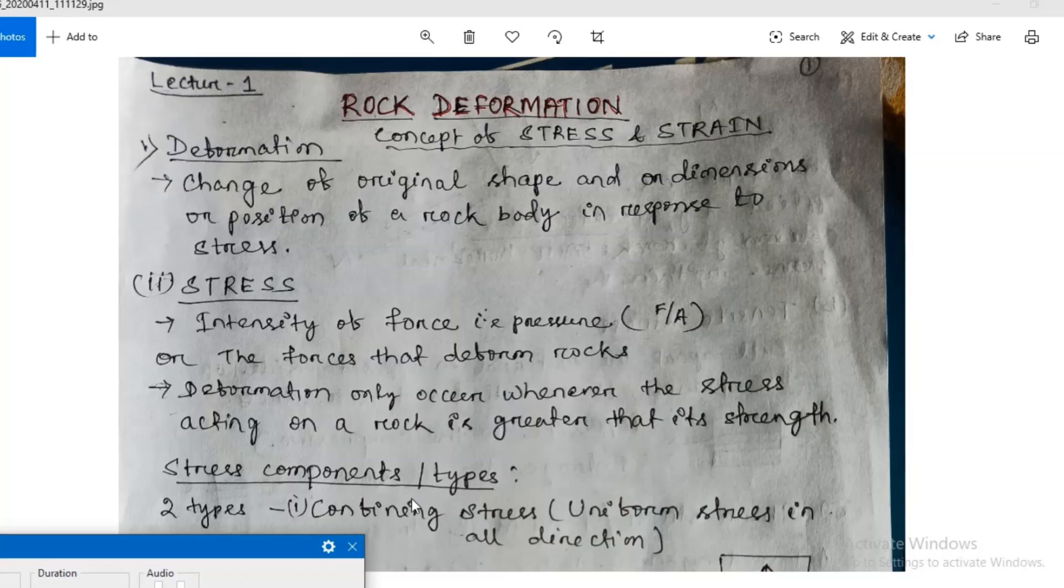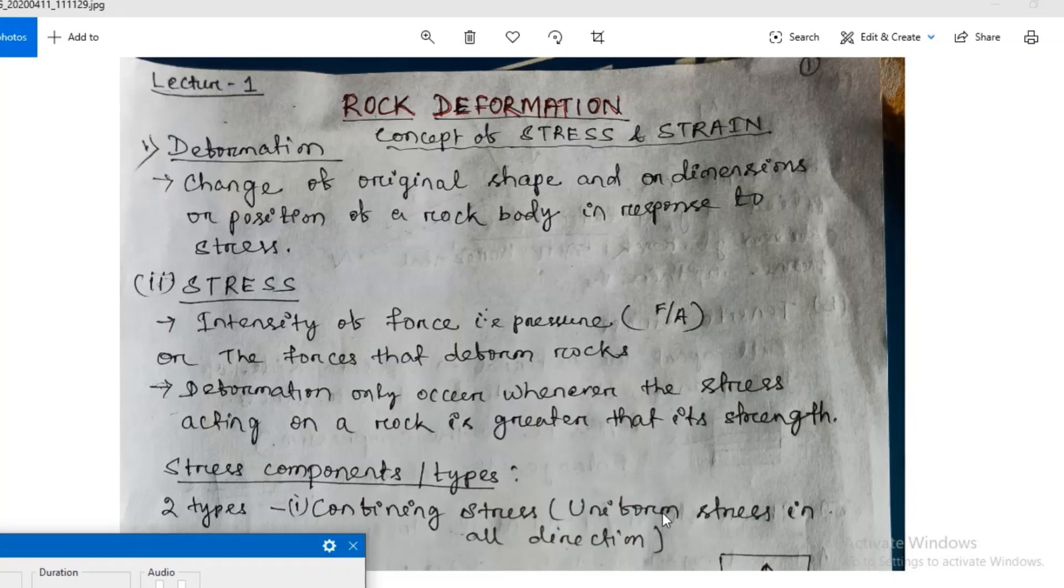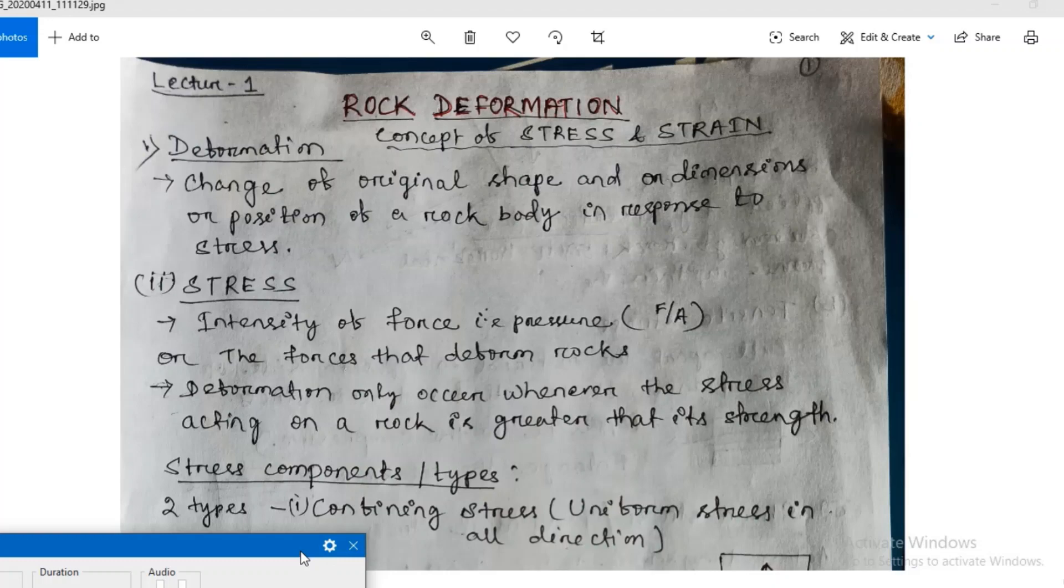Then comes the stress components and types of stress. There are two types of stress. First is confining stress, then differential stress. Confining stress means uniform stress in all directions. Changes occur same in all directions, or you have equal stress in all directions.